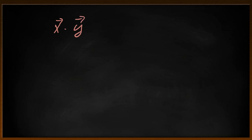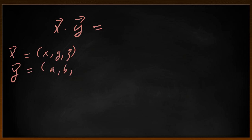Now, what happens when we multiply vectors? We've been taught two ways of multiplying vectors. One is a dot product. So we take two vectors, say x and y, and we have a somewhat multiplication-like operation which, if the two vectors are (x, y, z) and (a, b, c), our dot product is xa plus yb plus zc.